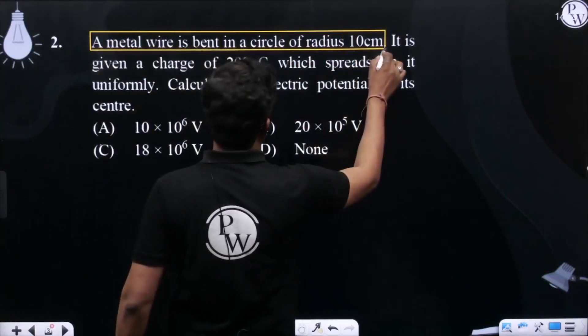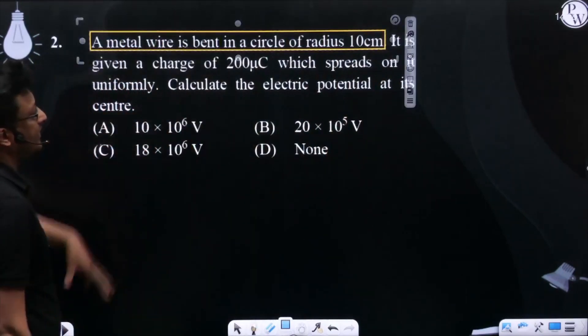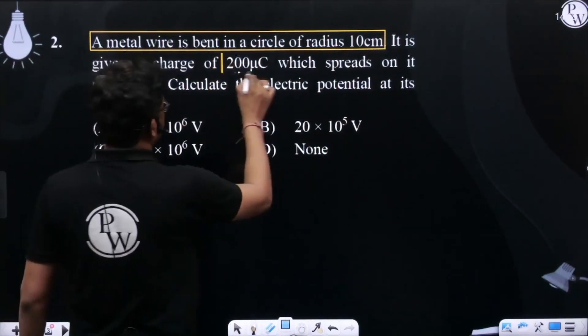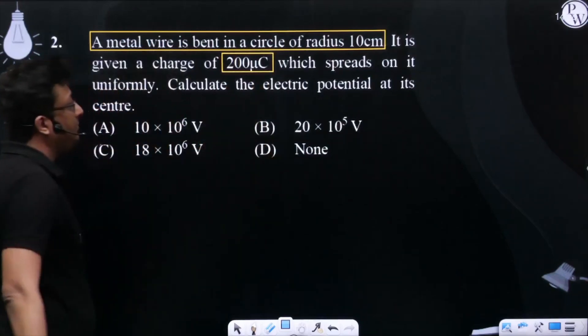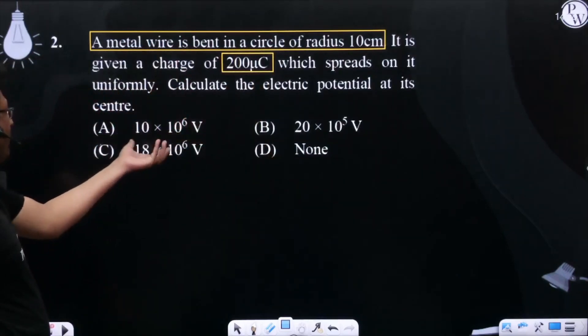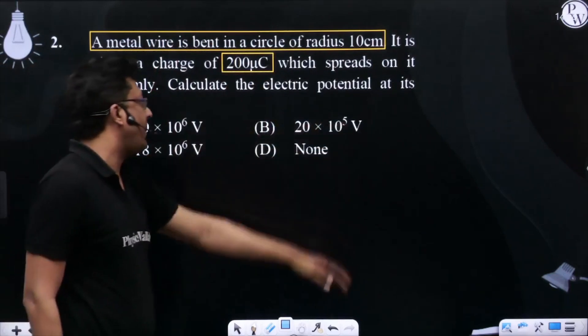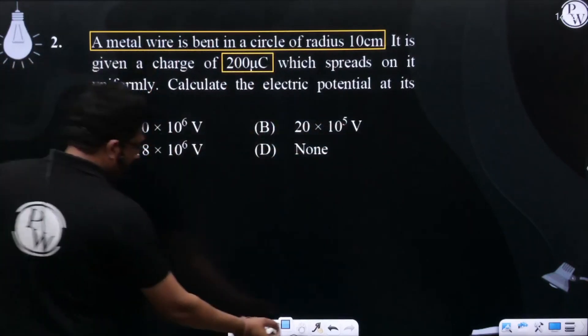A metal wire is bent to form a circle. Its radius is 10 centimeters. The charge on it is 200 microcoulombs, which spreads uniformly. Calculate the electric potential at its center. So quite an easy one.